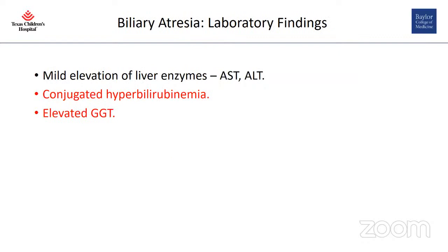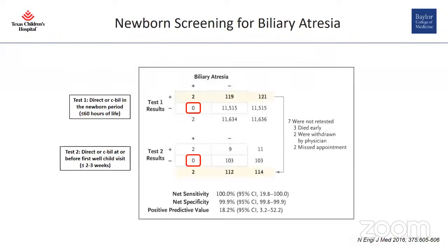Laboratory findings include mild elevations of liver enzymes — aspartate and alanine transaminases. The typical laboratory finding is conjugated hyperbilirubinemia with elevated GGT or gamma-glutamyl transferase.